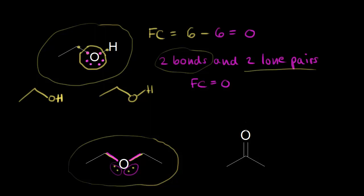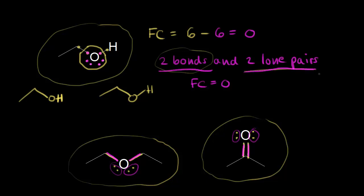On the right we have another example where oxygen has a formal charge of zero. This oxygen has two bonds to it — here's one bond and here's the other bond — and this oxygen would also have to have two lone pairs of electrons on it. I didn't draw them in for convenience, but I can go ahead and add them so it's easier to see that oxygen has a formal charge of zero and a total octet of electrons around it: two, four, six, and eight. So for oxygen, two bonds and two lone pairs of electrons give us a formal charge of zero.